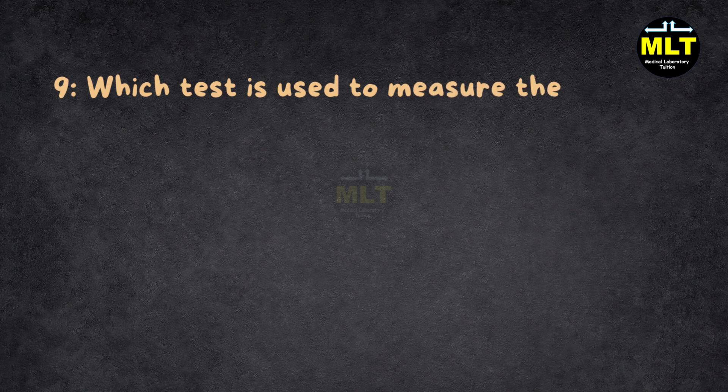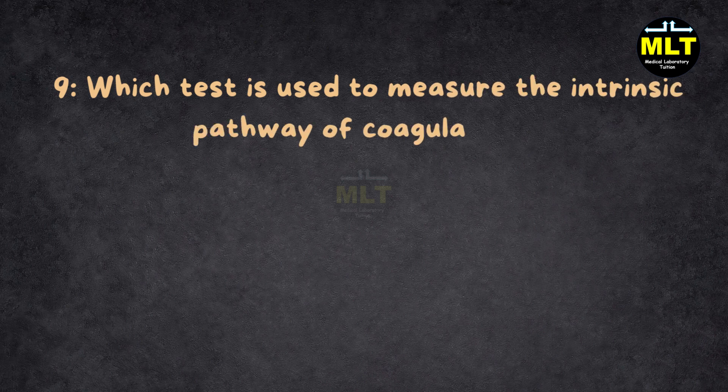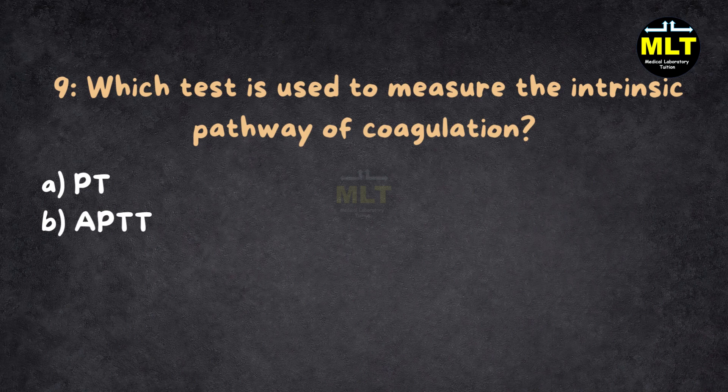MCQ 9. Which test is used to measure the intrinsic pathway of coagulation? A. PT (prothrombin time). B. APTT (activated partial thromboplastin time). C. INR (international normalized ratio). D. Platelet count.